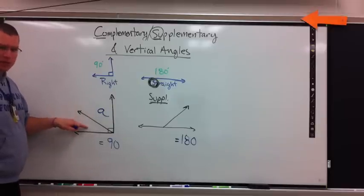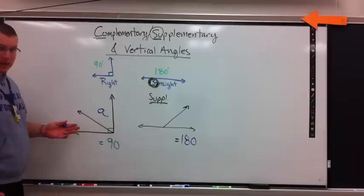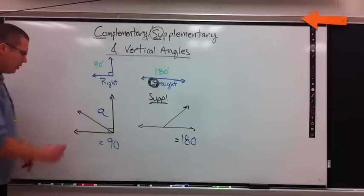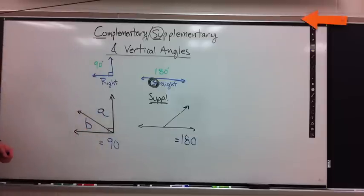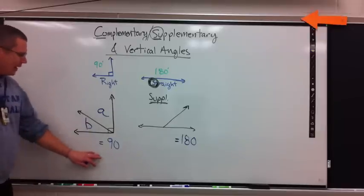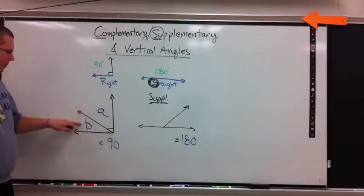Fine, we'll call it angle A. What is this angle then? Is it the same angle? Well, it doesn't look like it, but do we even know? The answer is no, we don't. So if this is angle A, let's call this one angle B. So if I'm writing an equation, what can I say about A and B? How do they work together to equal 90?